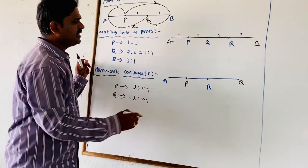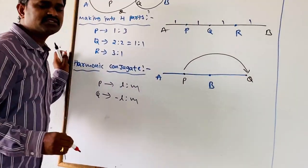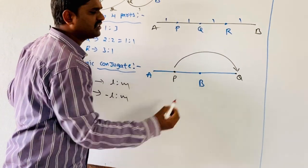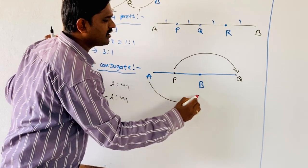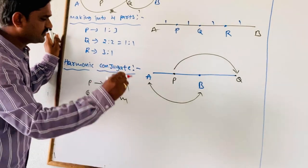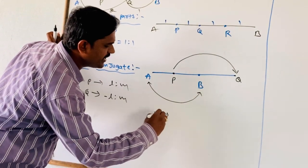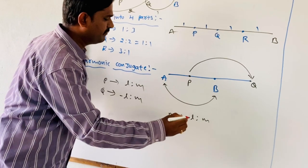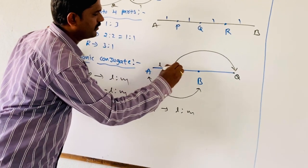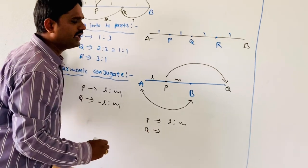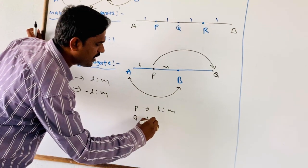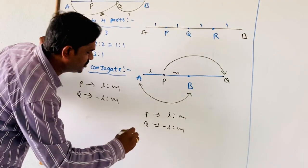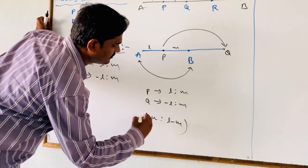P and Q are points of harmonic conjugate with respect to AB. With respect to P and Q, A and B are also harmonic conjugate points. If P divides AB in the ratio L to M, and Q divides AB externally in the ratio −L to M, then A and B divide PQ in the ratio (L + M) to (L − M).